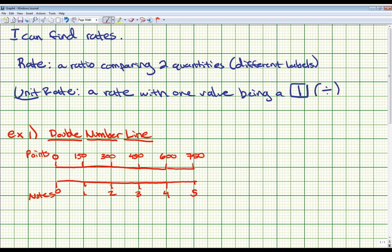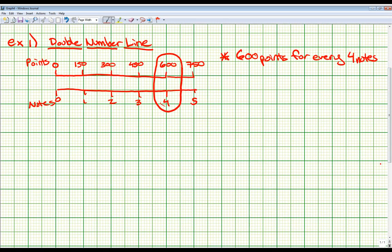So this is what they've given us. And the question says, write a rate that represents the situation. Remember up here, a rate is a ratio comparing two quantities with different labels. Well, these are two different labels. And they want us to write any kind of rate we want. So we can basically pick any item on this number line. So I'm going to circle this one. Let's make a rate for this position on the number line. If we make a rate for this, that would mean 600 points are being compared to four notes. So my rate would be 600 points for every four notes. And that is what a rate looks like. 600 points for every four notes. It is not a unit rate up here because one of the numbers has to be a one for it to be a unit rate. So this is just a regular rate.